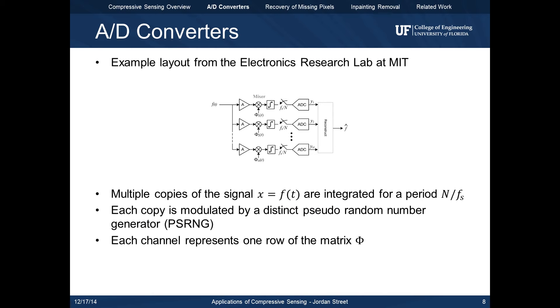One of the challenges of applying compressive sensing is coming up with a physical interpretation of the sensing matrix phi. In this system proposed by the ERL at MIT, multiple copies of the input signal are modulated and integrated by distinct pseudo-random codes. Here, each of the m channels represents a row of phi, and the number of samples, in this case fs over n, represents the number of columns of phi.